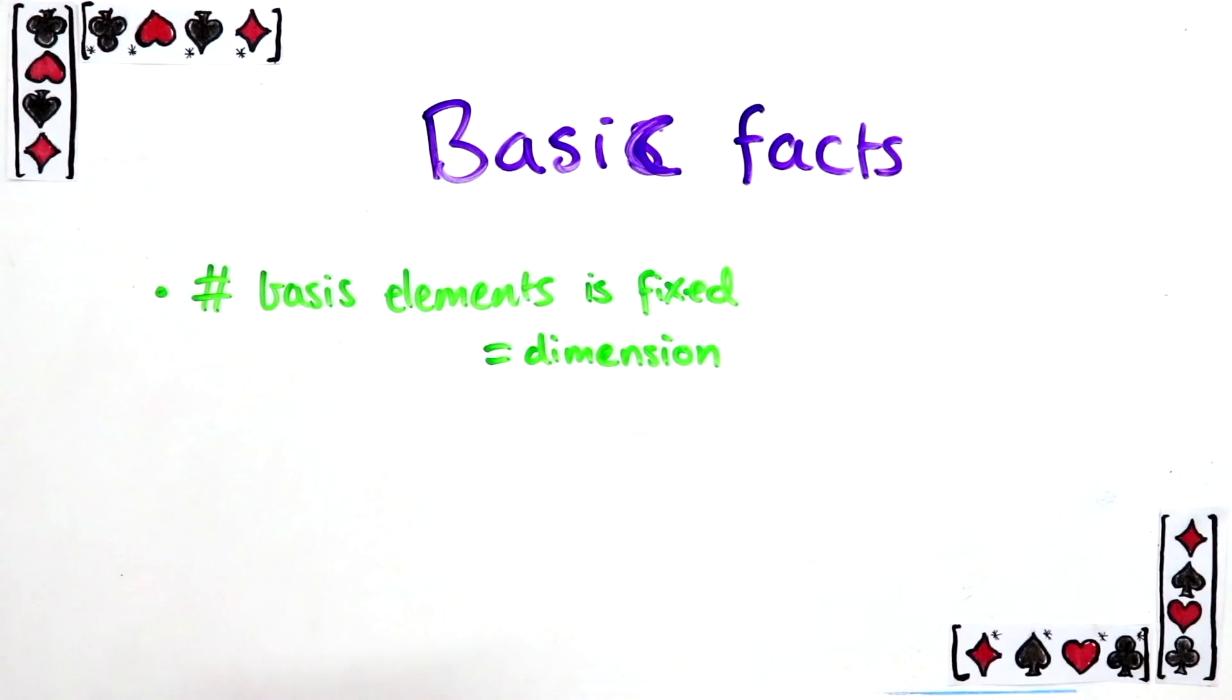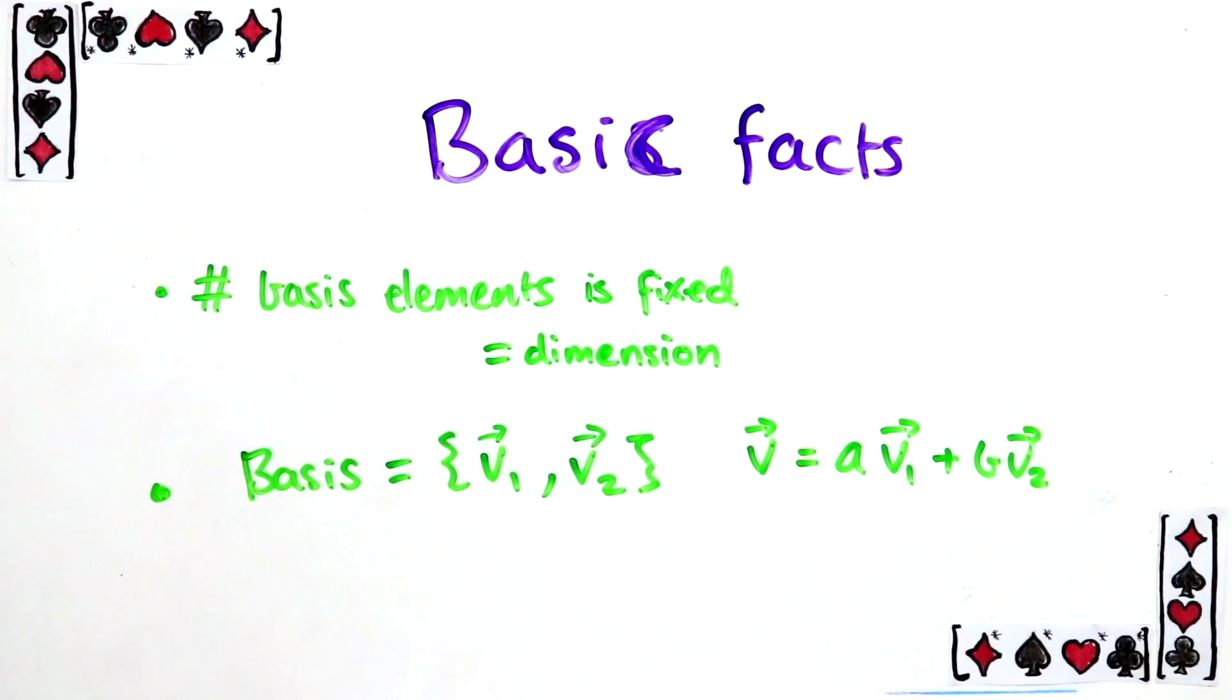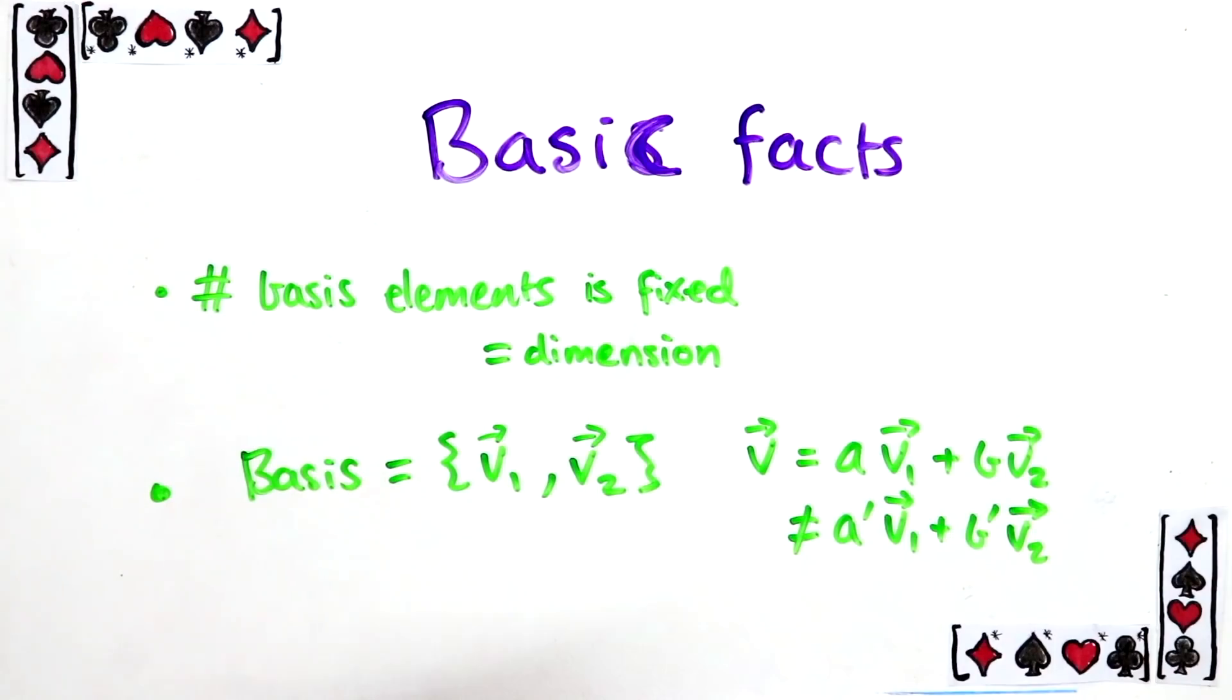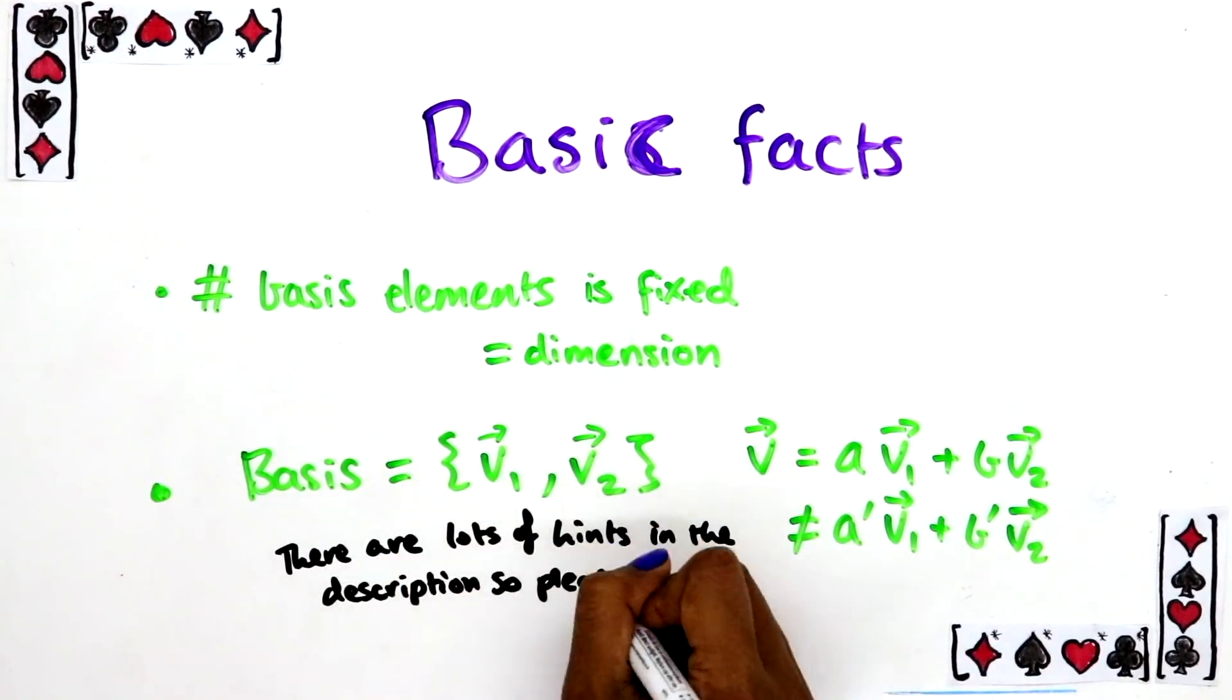The second is, if you pick a basis, and you write another vector in that space as a linear combination of these basis elements, there's only one correct way to do it. I.e., you couldn't write that v is also equal to this other linear combination. It's not hard to prove these two statements, and I think it's really good practice for you to try, so I'd like you to have a go at it and write your solutions in the comments.